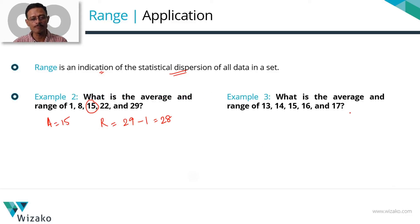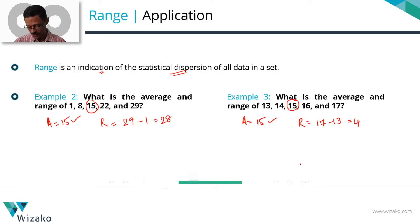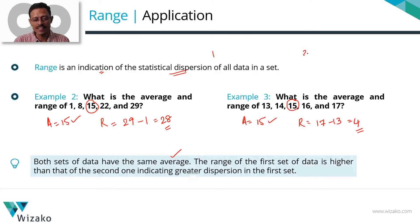Let's do it for another example. This time we have a different set of 5 numbers. Are these numbers in an AP? Yes — the common difference is 1, they are written in ascending order, and the middle number is the average. So the average for this data set is also 15, same as the first set. Now let's compute the range: 17 minus 13 equals 4. The average for both sets is the same, but the range for the first set is 28, much larger than the range for the second set which is 4. This means the elements in the first set are dispersed much more than the second set. Greater the range, larger the dispersion.